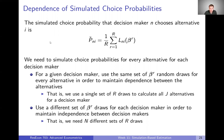What we need to do is simulate choice probabilities not just for one decision-maker and one alternative, but for every alternative and for each decision-maker. So across both of these dimensions, we need to expand our set of choice probabilities.